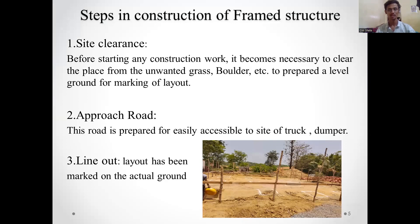The second step is construction of the approach road. The third step is line-out. The layout has been marked on the actual ground and that process is called line-out.